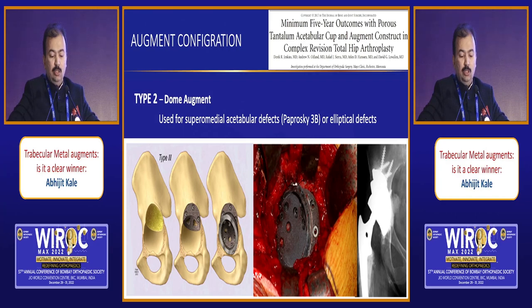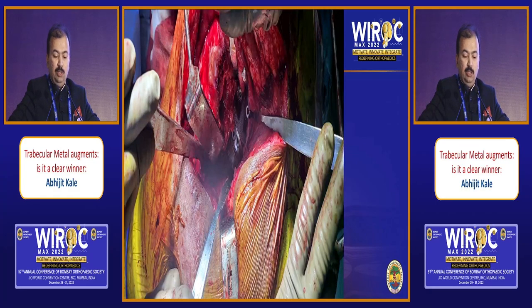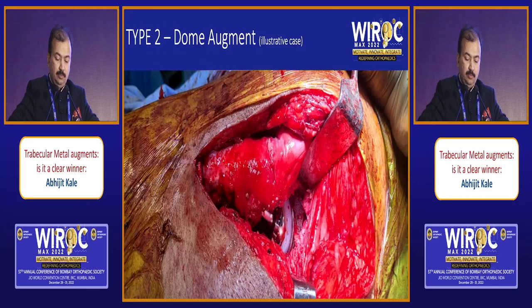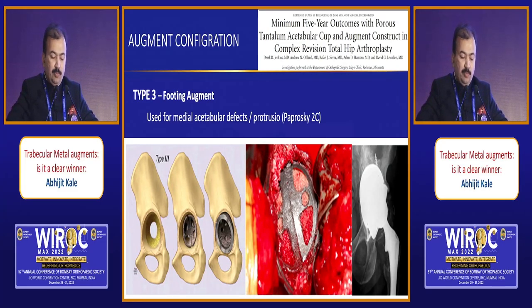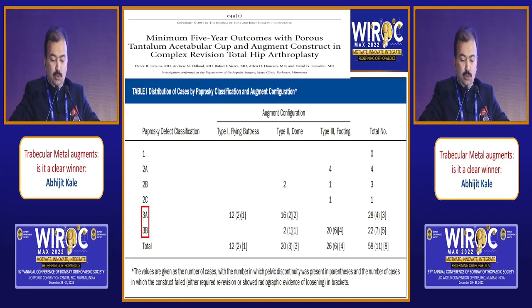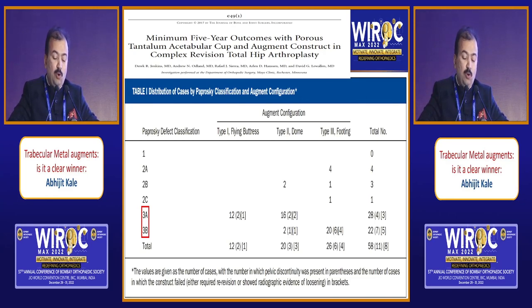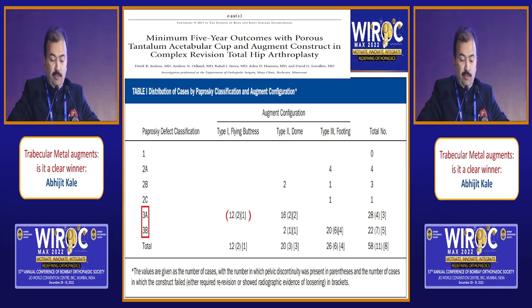The dome augment configuration is used for superomedial defects — Paprosky Type 3B, the elliptical defects. A case example: 55-year-old male post-infection sequelae with an elliptical defect, managed with the dome augment, then proceeding with conventional replacement. The footing augment is used when there is a medial defect — Type 2C. To summarize: flying buttress is indicated for Type 3A, dome augment for Type 3A, 3B, or even 2B, and footing augments for Type 2 as well as 3B defects in combinations.